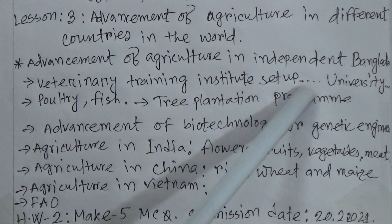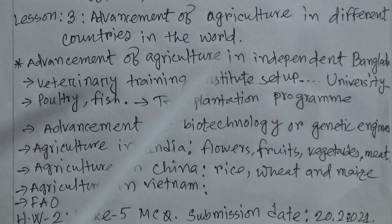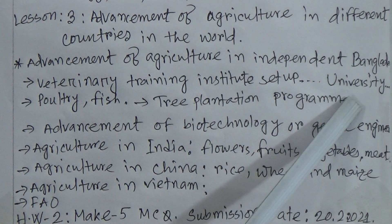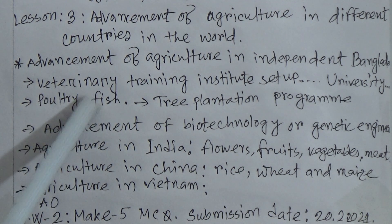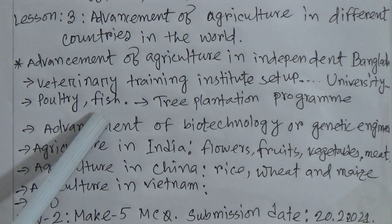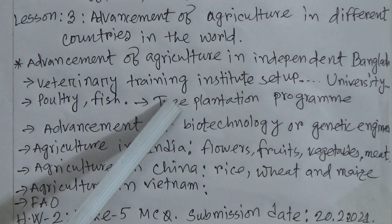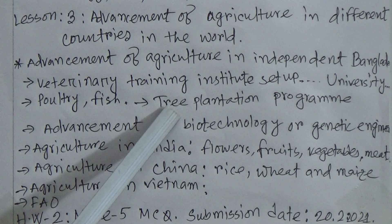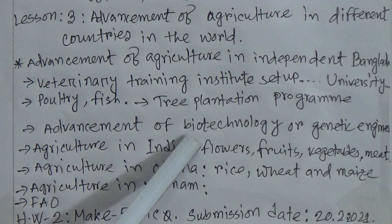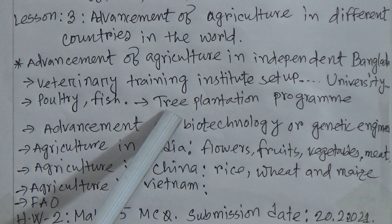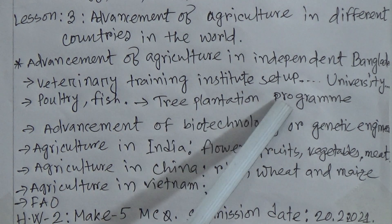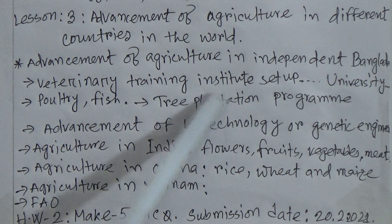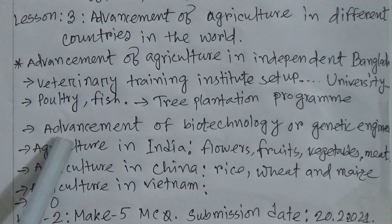After the liberation of our country, agriculture departments were set up in our universities, and as a result poultry farming and cultivation of fish were also shown to a great extent — poultry and fish production increased greatly at that time. Our government also influenced farmers to plant more trees and tried to fulfill tree plantation programs. As a result, farmers were very much eager to plant more trees and were very much benefited by doing this.